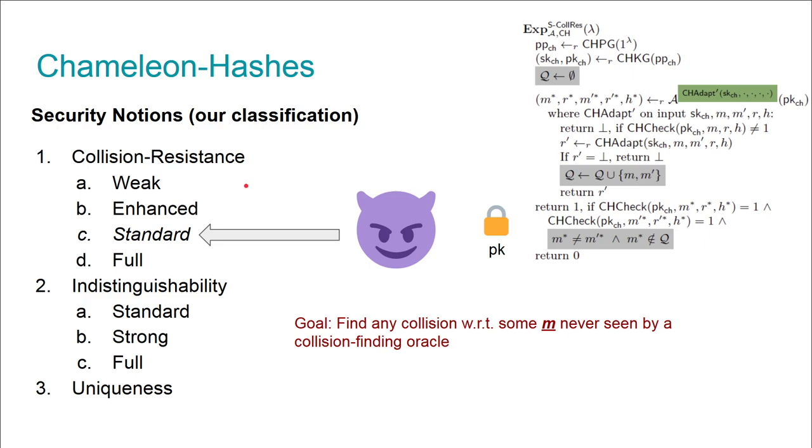Contrary, we have standard collision resistance, which is very similar to enhanced collision resistance, with the difference that the hash is no longer logged, but the old and new message for the collision. The adversary wins if it can come up with some message M* which was never seen by the collision-finding oracle. Now we have ruled out that the adversary can play around with the message, but the hash itself may still be malleable. We show in the paper that such schemes actually do exist.